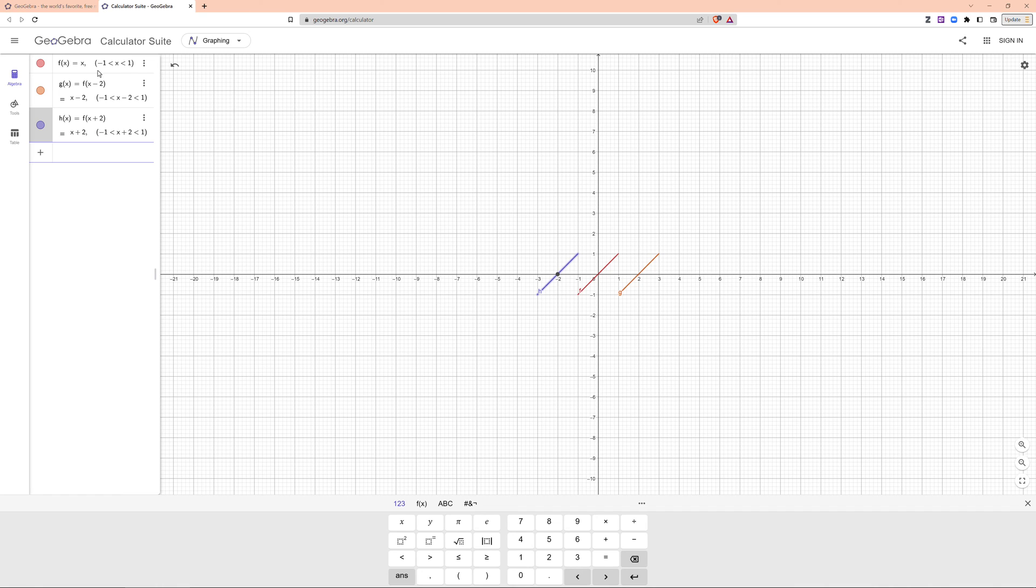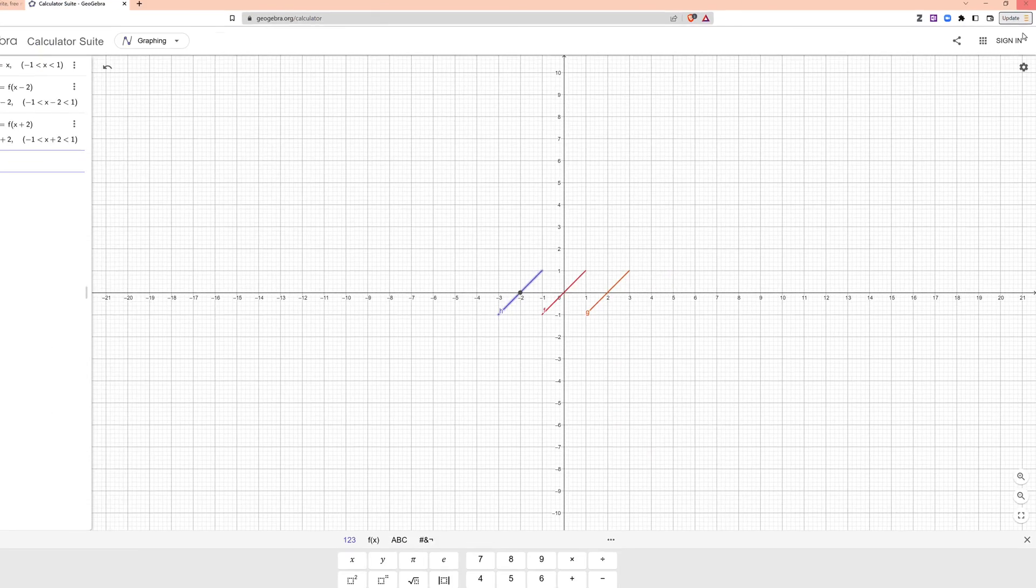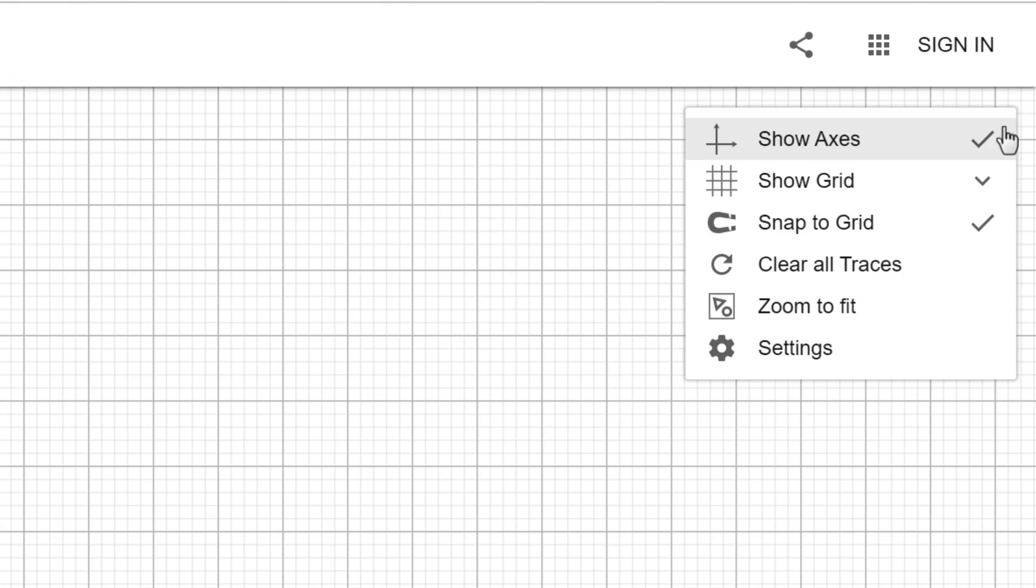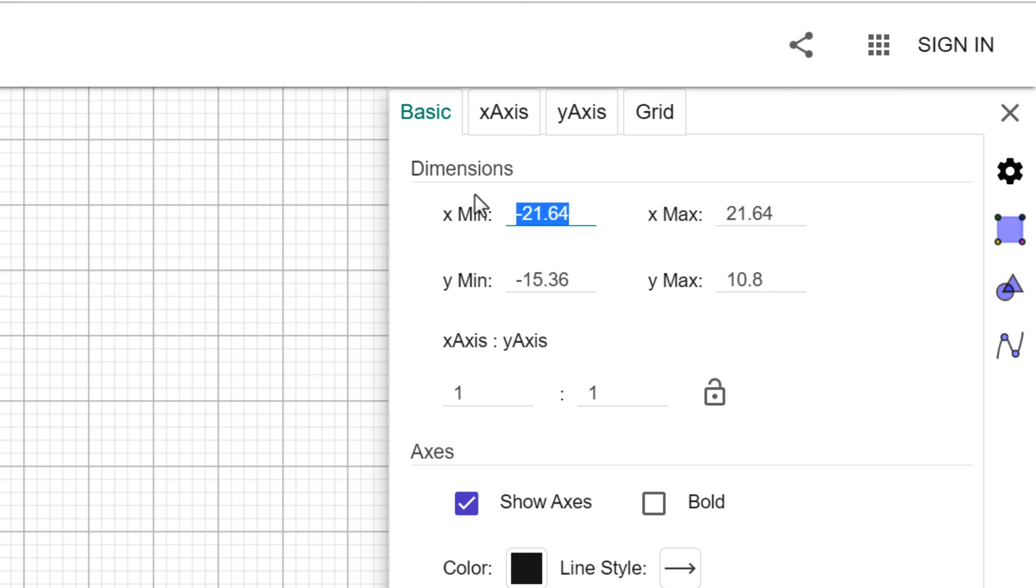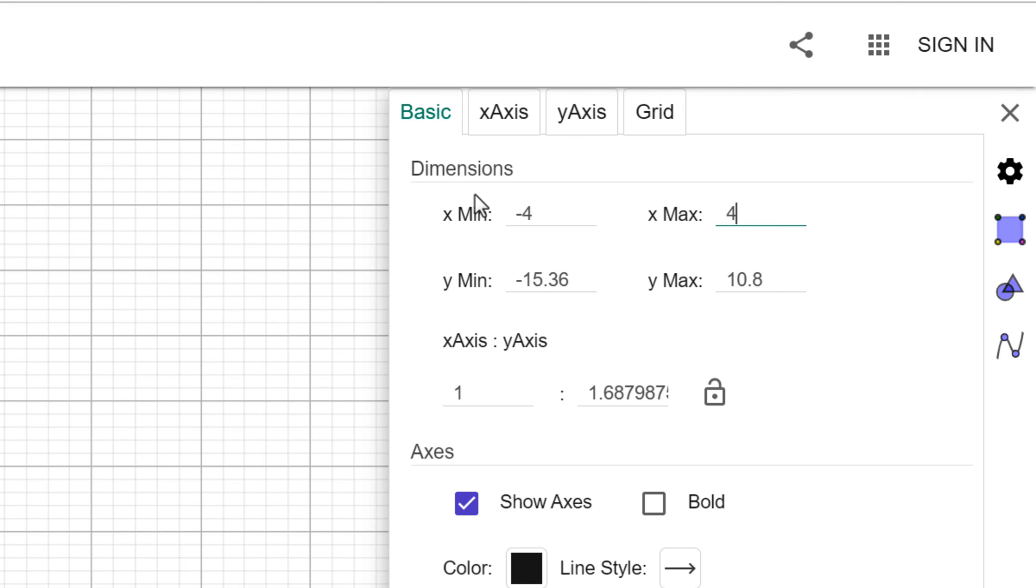You can go to the gear icon in the right upper corner. You can find the option to adjust. Now, I will limit my plot between -4 to 4 in x direction, -1.5 to 1.5 in the y direction.